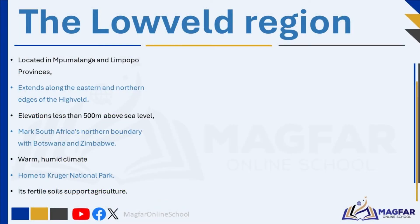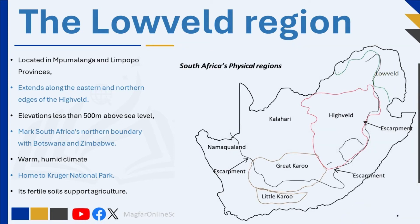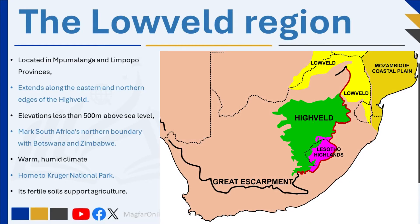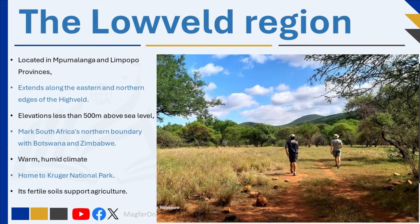The Lowveld region is located between the Lebombo Mountains in the east and the northern part of the Drakensberg in Limpopo and Mpumalanga. These lowlands, with elevations less than 500 meters above sea level, mark South Africa's northern boundary with Botswana and Zimbabwe. The Lowveld is characterized by a warm, humid climate and diverse landscapes ranging from fertile river valleys to open savannas and bushveld. It is home to iconic wildlife reserves like Kruger National Park, and its fertile soils support agriculture. The Lowveld is susceptible to occasional flooding during the rainy season as it is near major rivers such as the Limpopo and the Sabie.